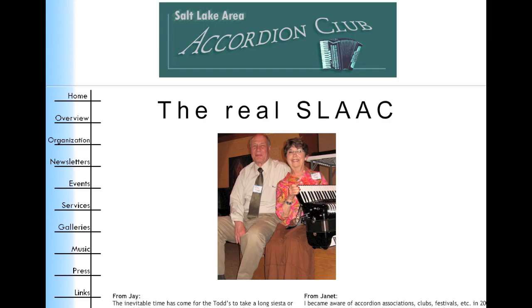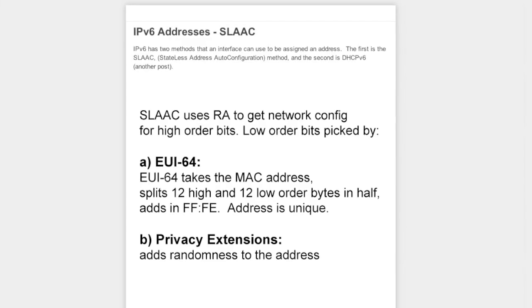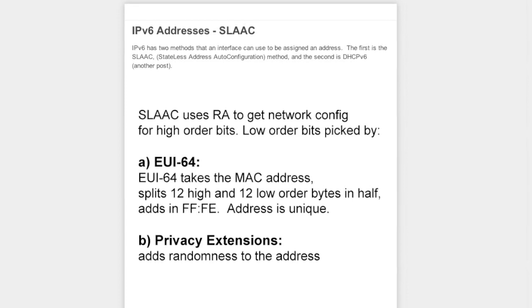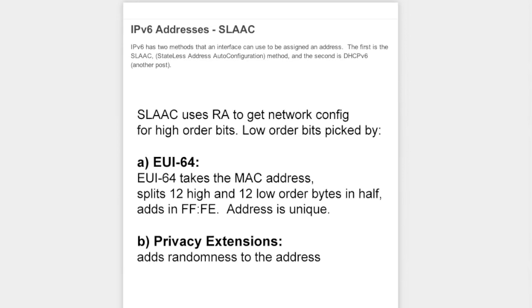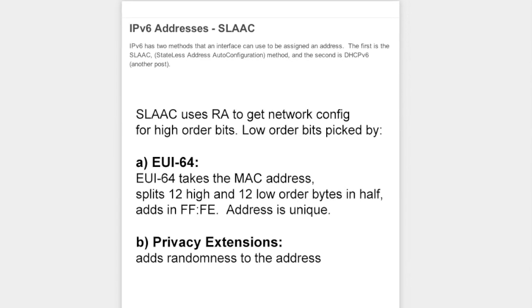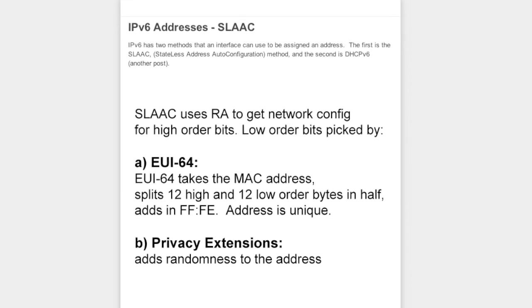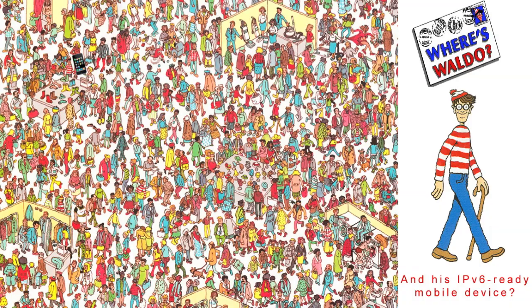Those of you already familiar with stateless address auto configuration know that the v6 address chosen by the mobile device can contain its MAC address. An auto mechanism forms the host identifier from the link layer media addressing information. This could allow a v6 enabled server to track your iPhone or iPad as it moves across connections.